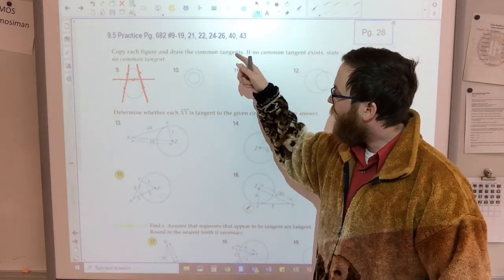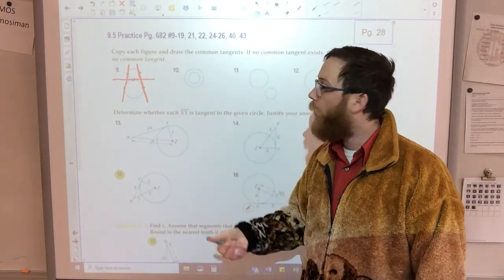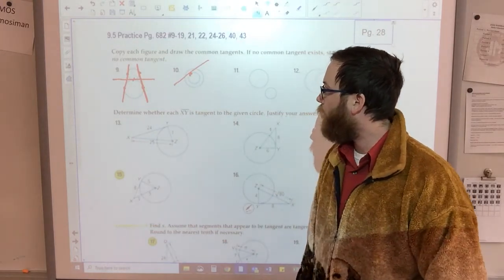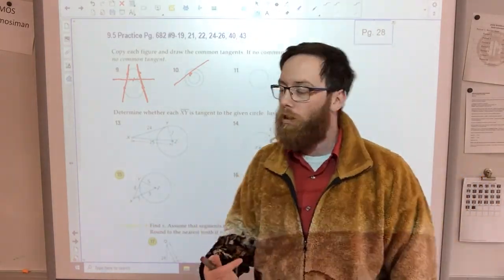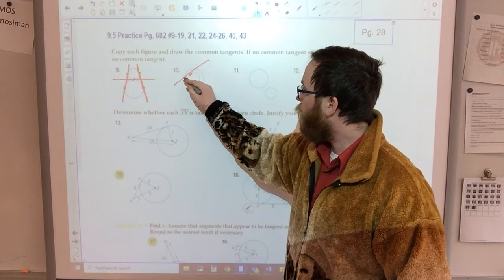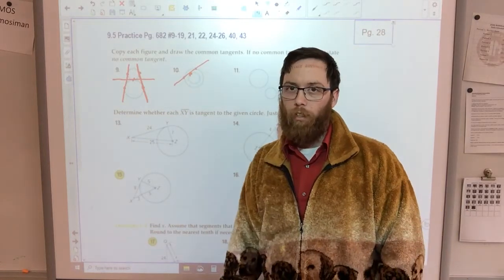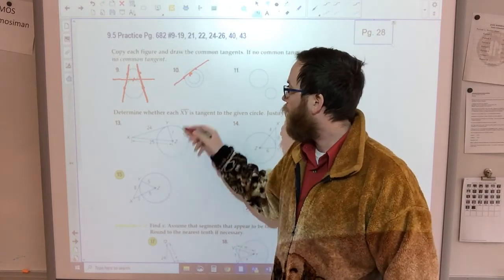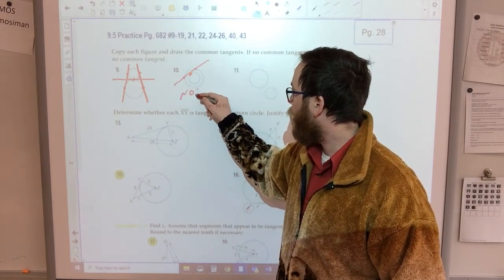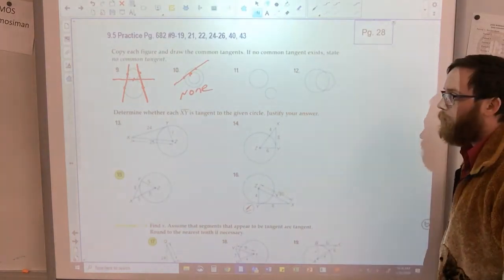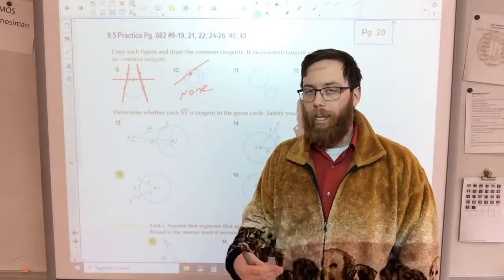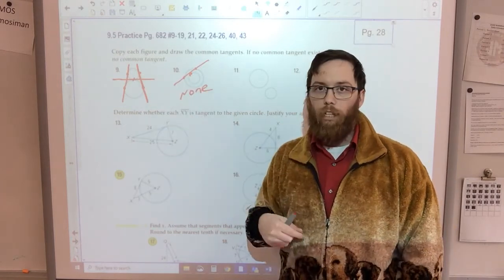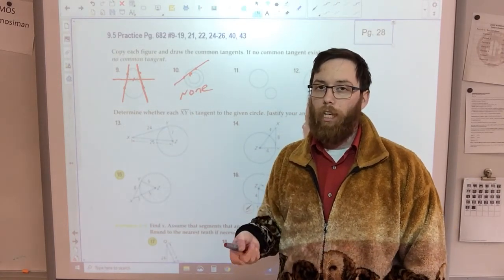Number 10, there is no single line that you could draw and it would touch each circle once. Any tangent line that I draw on the little circle would also hit the big circle twice and that wouldn't be common. So there would be no common tangents here. So this would be none. That's what I mean by common tangent lines. It's a tangent line that is true for both circles or two circles at the same time.